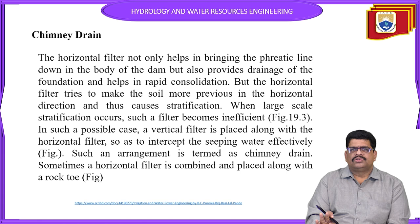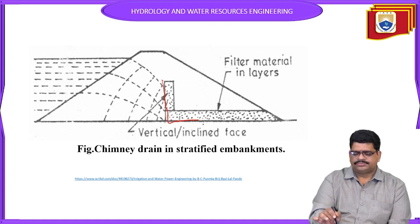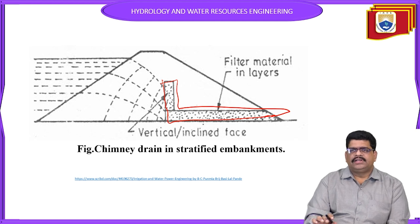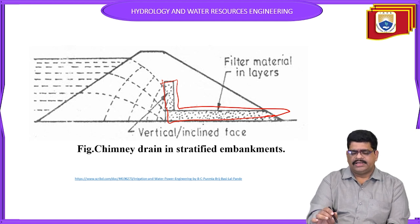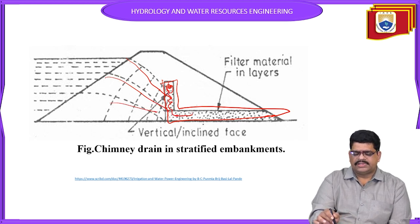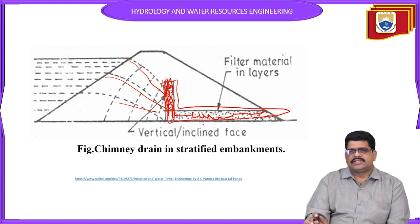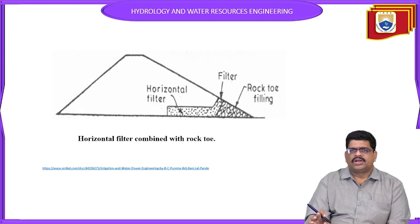Chimney drains: a chimney-type drain can be provided inside the dam. On the upstream side, filter materials are provided which absorb water but do not allow it to pass further. The chimney is constructed with sand and gravel materials and provides drainage in a chimney-type configuration. This is also one of the protection methods for controlling seepage water.